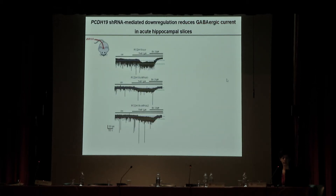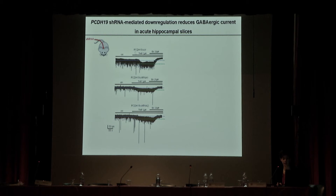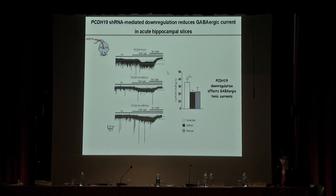Right now, we are trying to reconfirm this data in hippocampal slices. These are still preliminary data. Here the experimental approach is slightly different: we compare currents under control conditions and currents evoked using an agonist of delta-containing GABA-A receptors. Nonetheless, we observe a reduction of the current shift, indicating a reduction in tonic current.